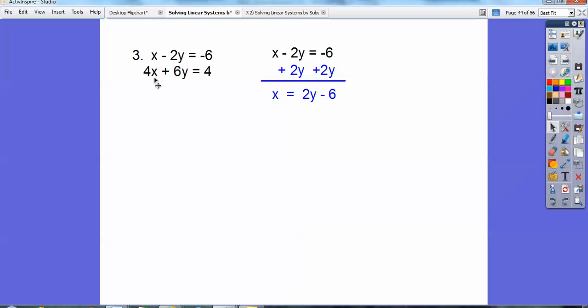So I'm going to put four parentheses, 2y minus 6, and then we got this plus 6y right here, and then equals 4, and then we can solve for y. Okay, so let's go ahead and plug it in right there.